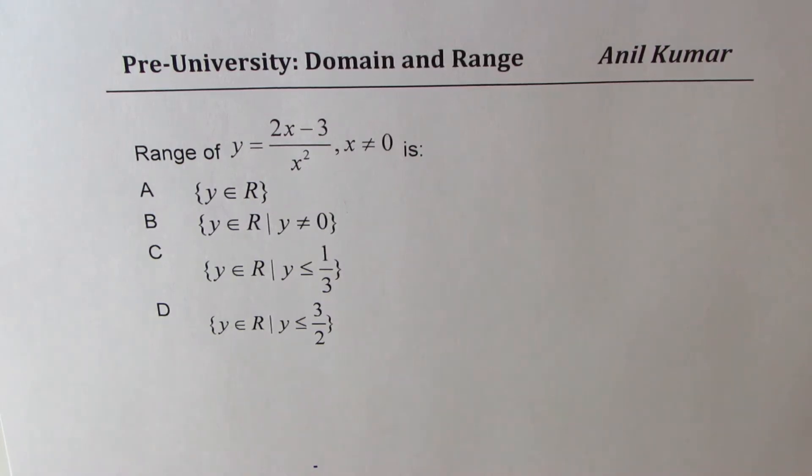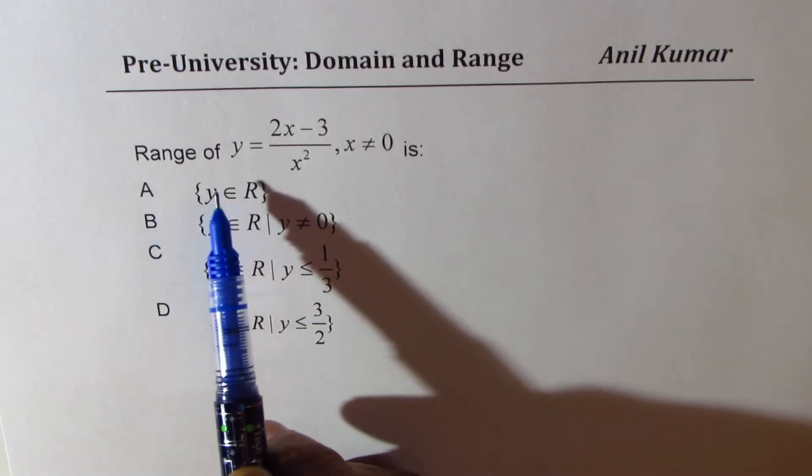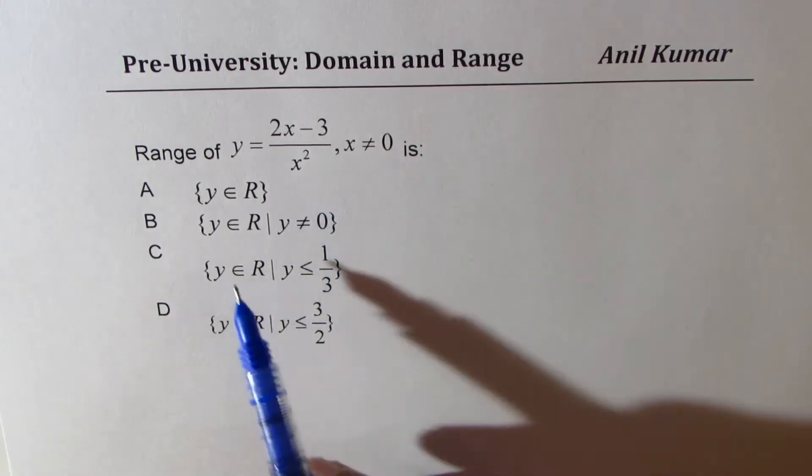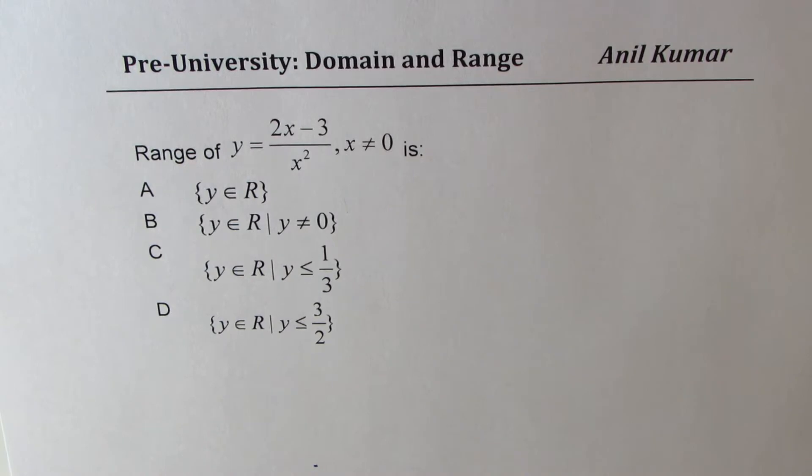I'm Anil Kumar, sharing with you an excellent question on domain and range. The question is, range of y equals 2x minus 3 divided by x squared, where x is not equal to 0, is what? Four choices are given to you.